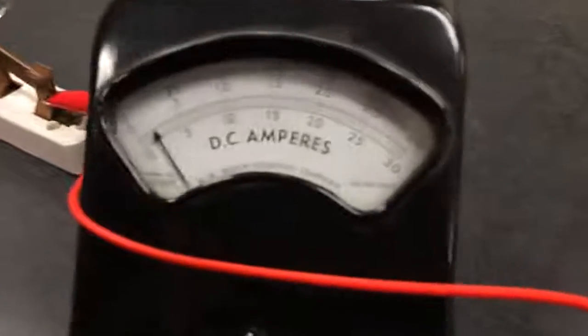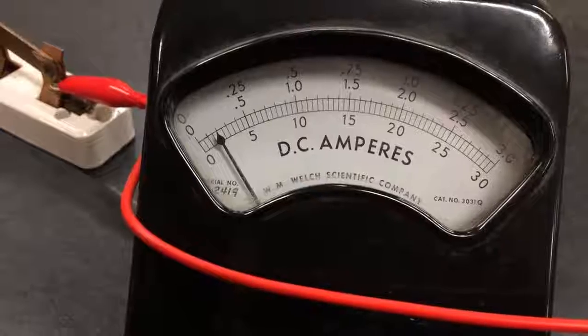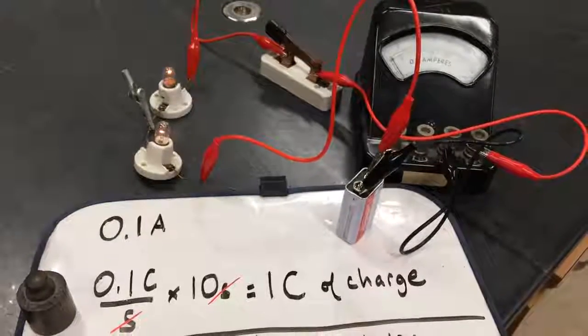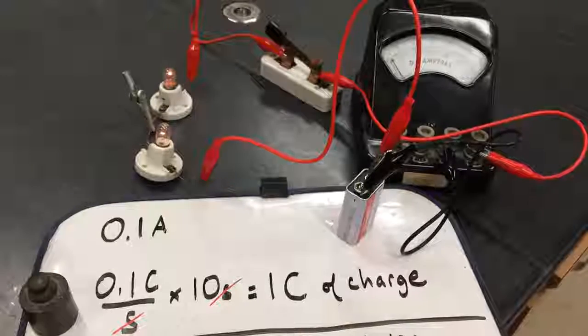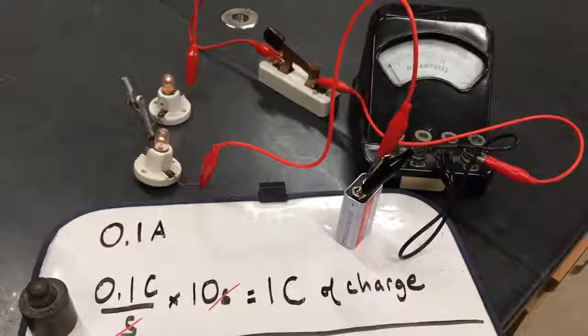Let's try to figure that out. Remember, in each second, we got 0.1 coulombs. So in that 10 seconds we spent watching the light bulbs, I wanted to figure out how many coulombs of charge flowed through the circuit and what that represented in terms of numbers of electrons.